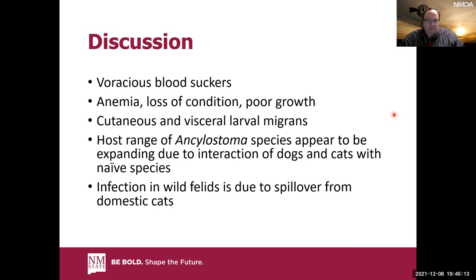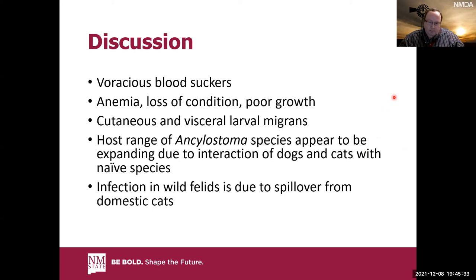The host range of Ancylostoma appears to be expanding, mainly due to interaction of dogs and cats with more naive wildlife species. The infection of wild felids such as this mountain lion is probably due to spillover from domestic cats. Wherever this mountain lion ranged, there were likely many domestic cats in the area. The zoonotic potential of these parasites is mainly a concern in certain countries.